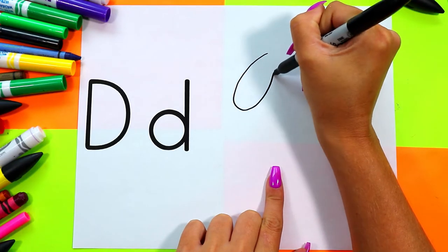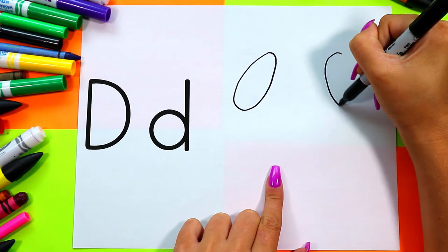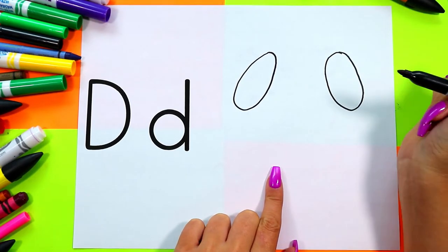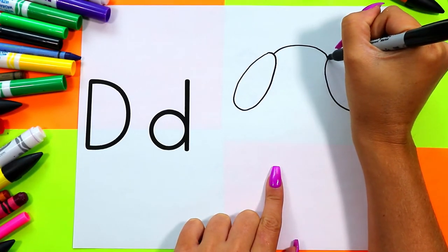We're going to draw one oval and a second oval for some floppy dog ears. Draw one curved line at the top and a curved line at the bottom for dog's face.